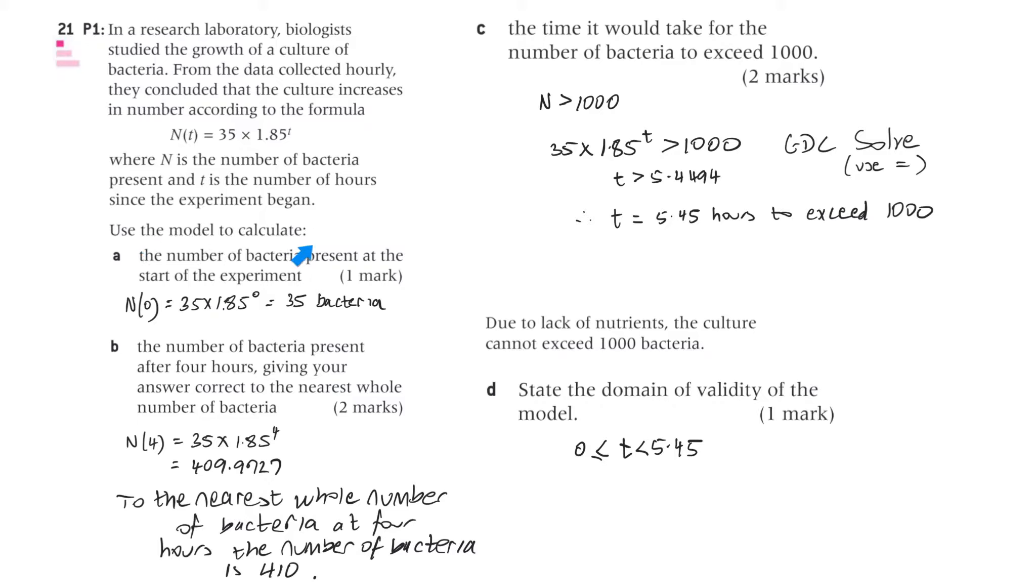Where n is the number of bacteria present and t is the number of hours since the experiment began. Use the model to calculate part A, the number of bacteria present at the start of the experiment. Well, that's when t is zero. Number of hours is zero, so the function is represented with that notation. 35 times 1.85 to the zero power, which equals 35 bacteria.